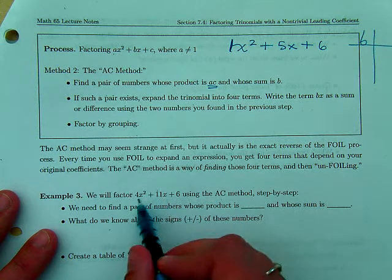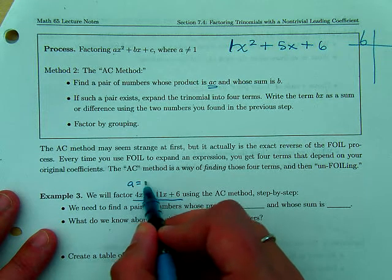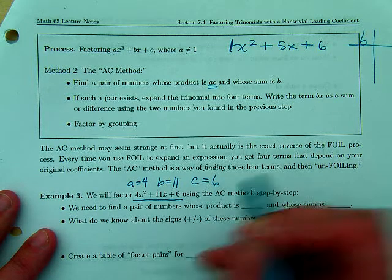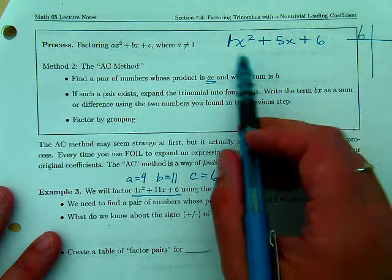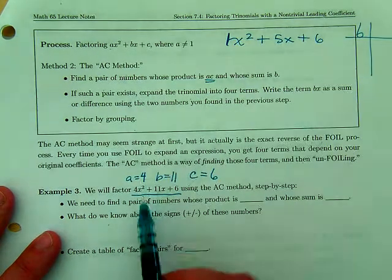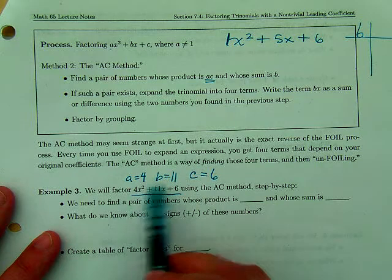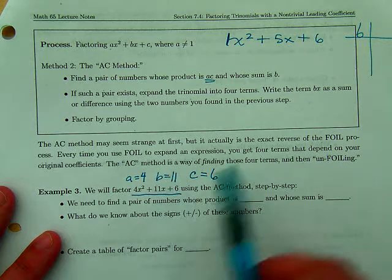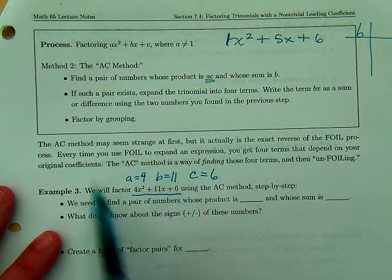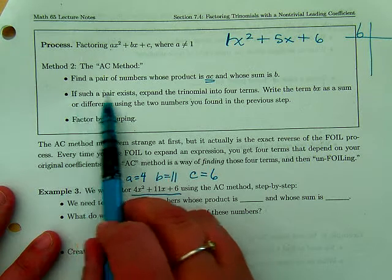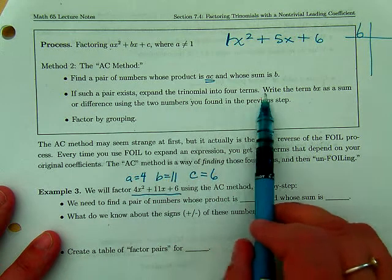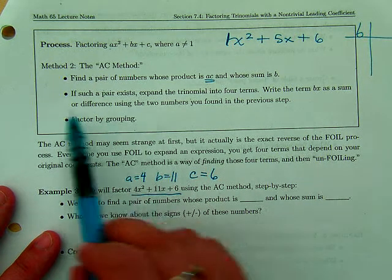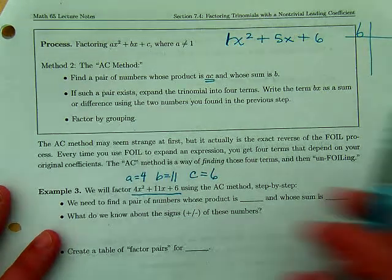So before we were factoring just the 6, now we're going to be factoring the a times the c. I'll show you in a minute when we get to this example. You see here how a is equal to 4, b is equal to 11, and c is equal to 6. So instead of a being 1 and we just factor 6, we're going to be multiplying a times c, and then factoring to find a number that would multiply to ac but add to b, which is 11. If such a pair exists, expand the trinomial into four terms. Write the term bx as the sum or difference of the two numbers, and then factor by grouping.